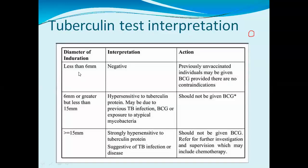The tuberculin test interpretation is based on the diameter of induration — the red swollen area on the skin. If the diameter of induration is less than 6 millimeters, the result is interpreted as negative, meaning that previously unvaccinated individuals can be given BCG vaccine provided there are no contraindications. If the area is 6 millimeters or greater but less than 15 millimeters, further evaluation is needed.